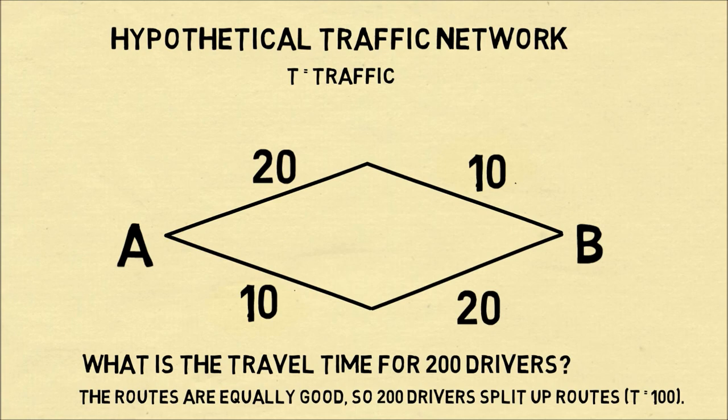That would make the traffic-dependent roads take 10 minutes each, and therefore the total travel time from A to B would be 30 minutes.